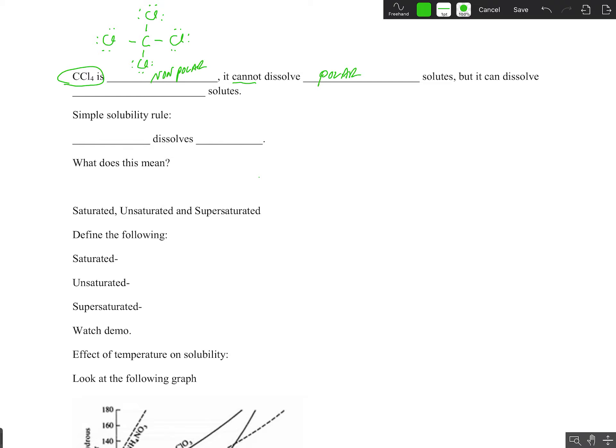It cannot dissolve polar solutes because it doesn't have positive and negative ends. So, it can't dissolve something like water. Likewise, it can't dissolve ionic compounds like sodium chloride because sodium and chloride have positive and negative parts. But carbon tetrachloride is nonpolar. It doesn't.